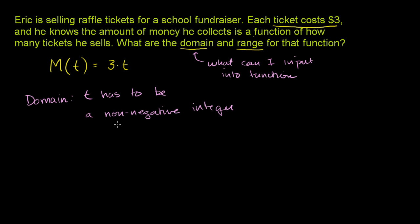He can't sell negative 1 ticket or negative 2. So it's anything that's non-negative, and it has to be an integer. He can't sell half of a ticket. So that's our domain.